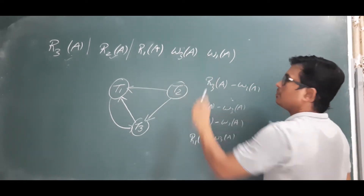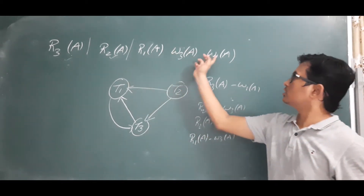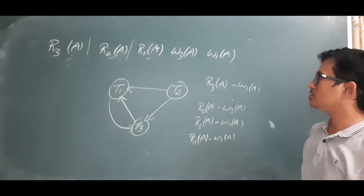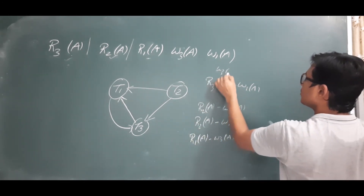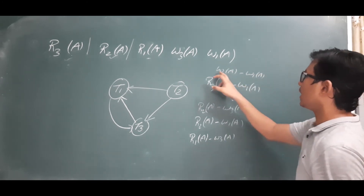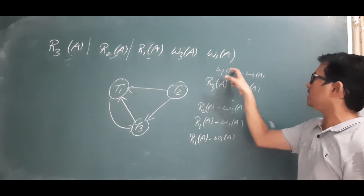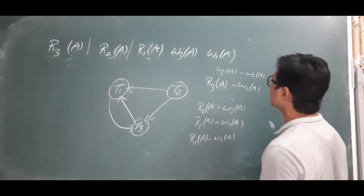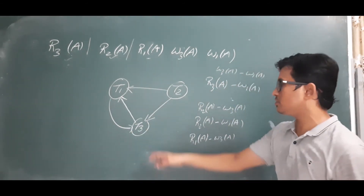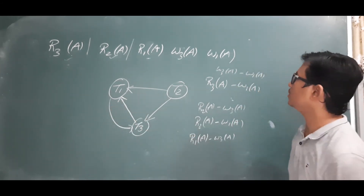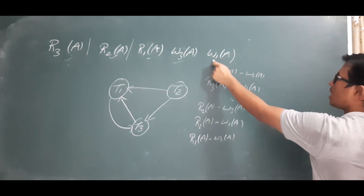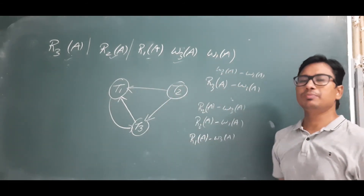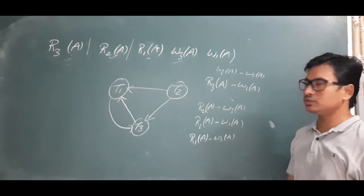R1(a) and W1(a) — they both belong to the same transaction, so it is not a conflicting operation. Now W3(a) and W1(a) — that is a conflicting operation: a write on transaction 3 and a write on transaction 1 on the same data item A. So there is an edge from T3 to T1 — but that edge already exists, so no need to draw it again. After this there are no more operations, so we have completed the construction of the precedence graph.